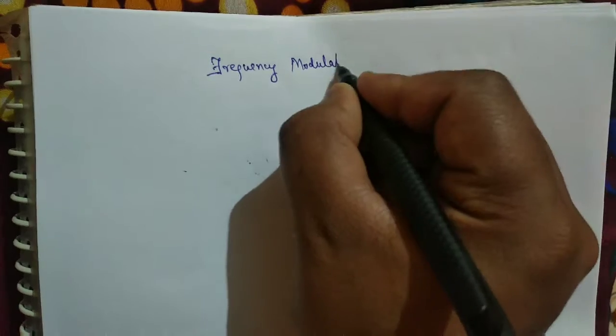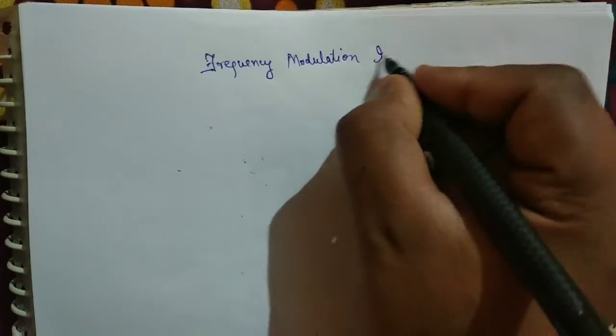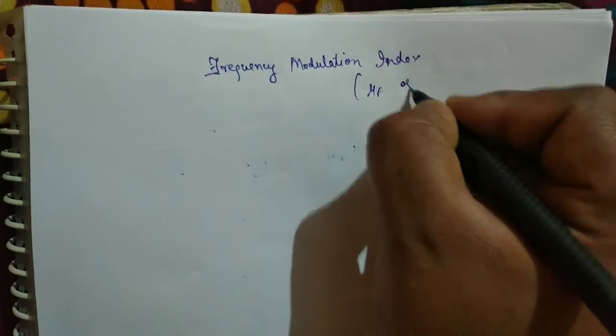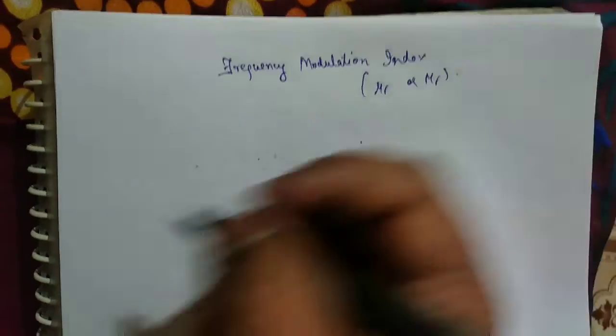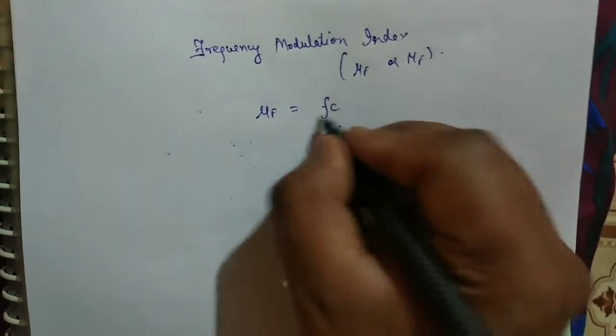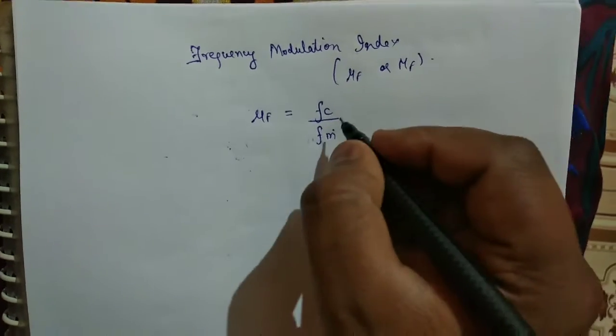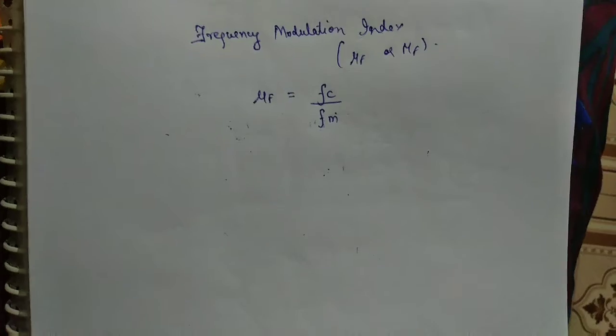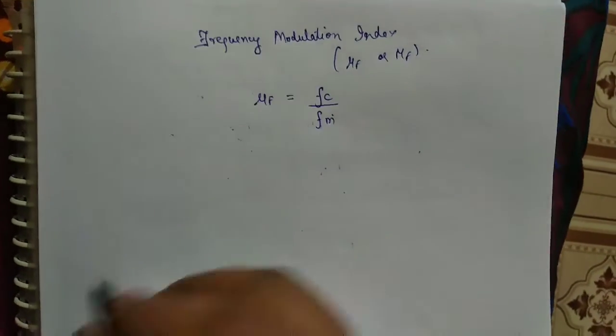Now we will see a terminology: frequency modulation index. It is denoted by μ_F or M_F. So μ_F is F_C by F_M, frequency of carrier signal upon frequency of modulating signal.